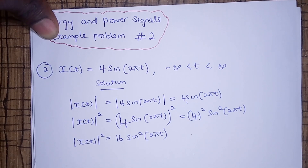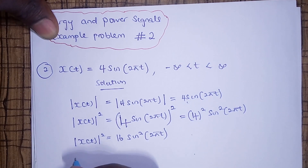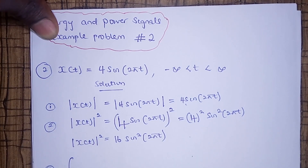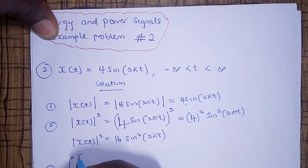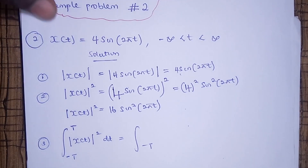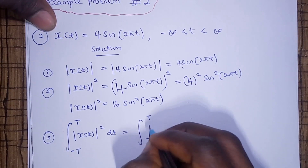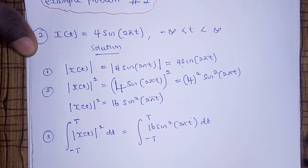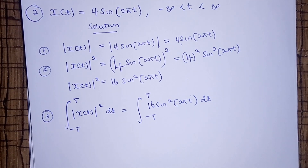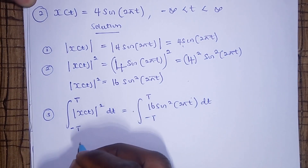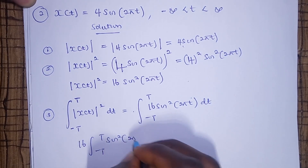After finding the square, the next step is to take the integral. We need to take the integral from negative T to T of x of t squared dt, which is the same as the integral from negative T to T of 16 sine squared 2 pi t dt. Never forget the dt whenever you have integration. We can factor the 16 out, giving us 16 times the integral from negative T to T of sine squared 2 pi t dt.